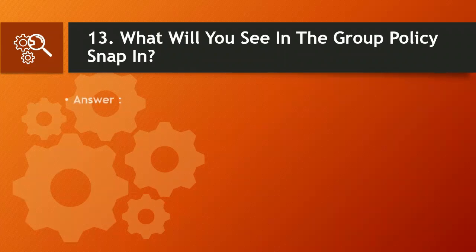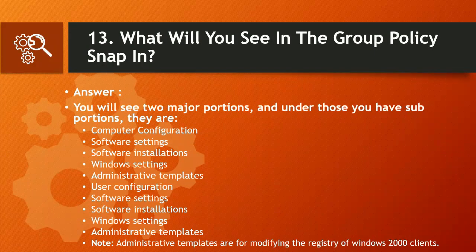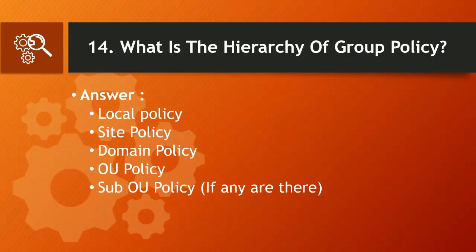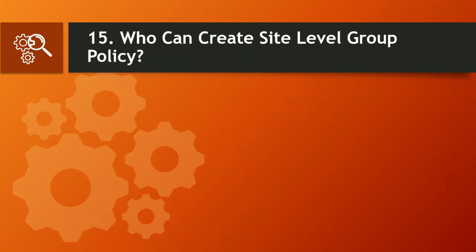Question 13: What will you see in the group policy snap-in? Answer: You will see two major portions with sub-portions: Computer Configuration (Software Settings, Software Installations, Windows Settings, Administrative Templates) and User Configuration (Software Settings, Software Installations, Windows Settings, Administrative Templates). Note: Administrative Templates are for modifying the registry of Windows 2000 clients. Question 14: What is the hierarchy of group policy? Answer: Local policy > Site policy > Domain policy > OU policy > Sub-OU policy, if any.